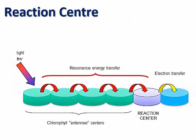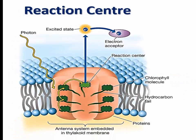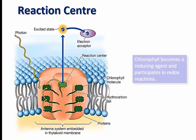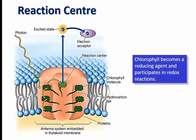Harvested light energy by the antenna complex is channeled to the reaction center of a photosystem. In plants, the pigment molecule in the reaction center is always a molecule of chlorophyll A. A chlorophyll molecule converts light energy into chemical energy by absorbing light energy and transforming it into an excited electron. This excited electron is then transferred to other molecules that we call electron acceptors. In other words, chlorophyll A becomes a highly reducing agent and participates in redox reactions.